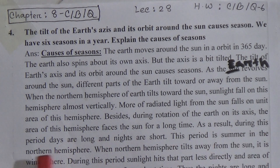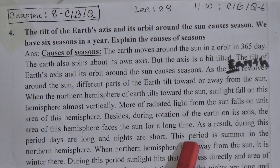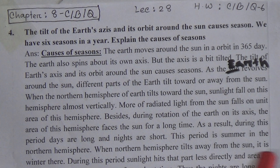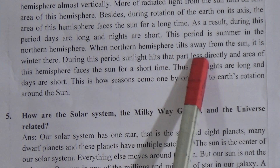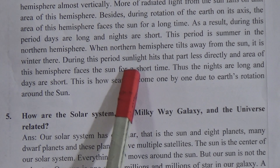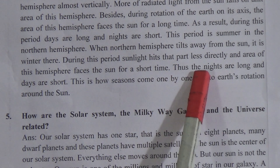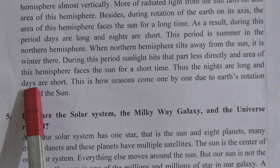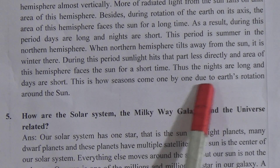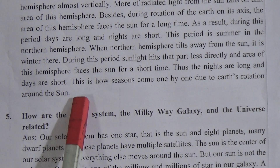As a result, during this period, days are long and nights are short. This period is summer in the northern hemisphere. When the northern hemisphere tilts away from the sun, it is winter. During this period, sunlight hits this part less directly, and the area of this hemisphere faces the sun for a short time. Thus the nights are long and the days are short. This is how seasons occur one by one due to earth's rotation around the sun.